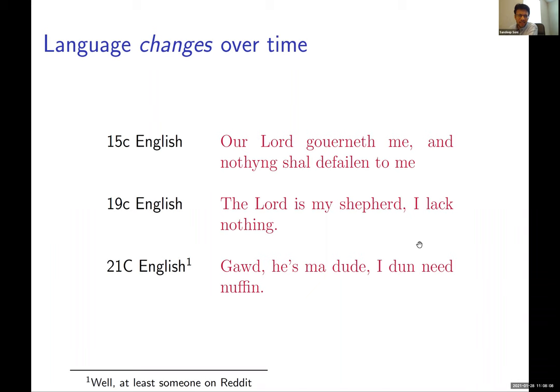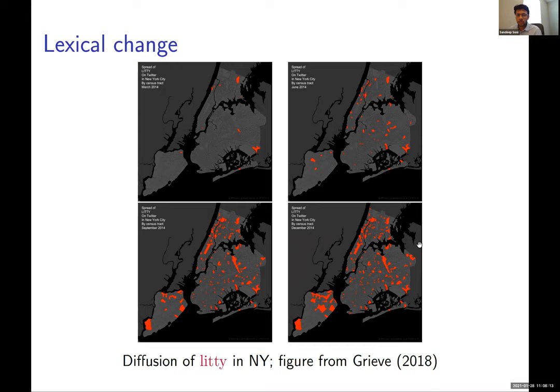You might say that this is a cherry-picked example — it happens over multiple centuries, and inevitably languages change at that scale. But that's not necessarily true. Here's an example of the word 'litty,' which is itself a variant of 'lit' — as in 'this party is lit' — and how that change spreads in New York City as seen from Twitter data. From left to right and top to bottom, you see neighborhoods in New York City as hotspots of usage of this word, and more neighborhoods start using it — all within the span of one year.